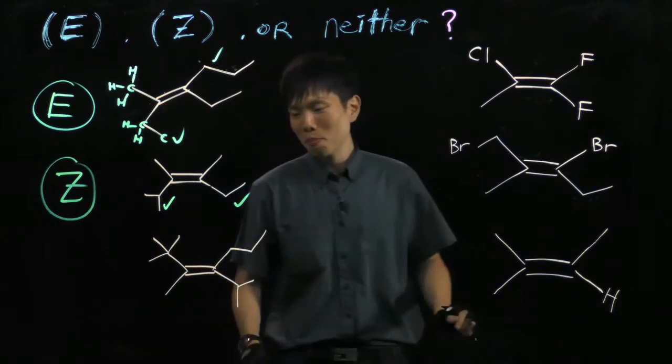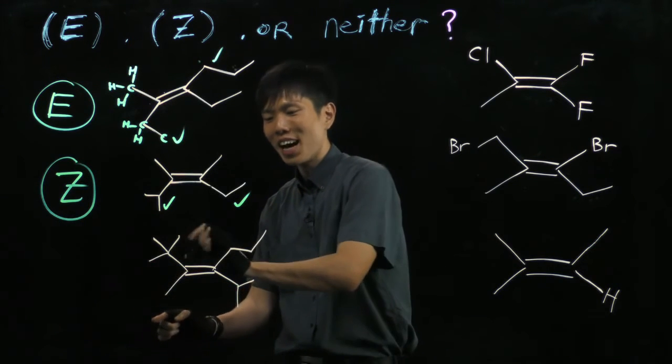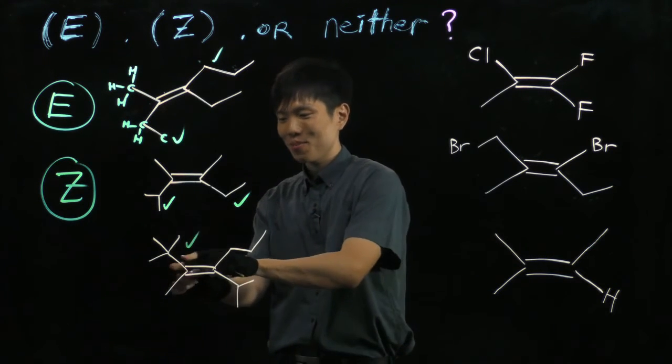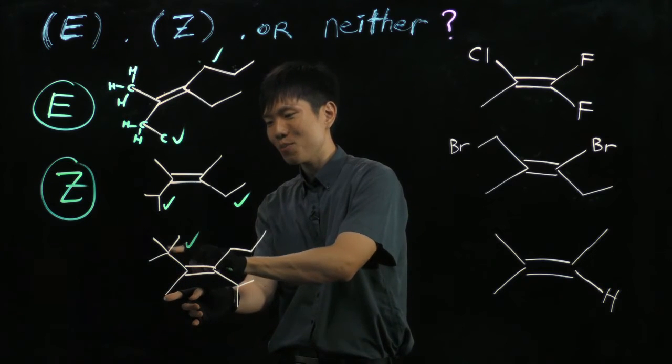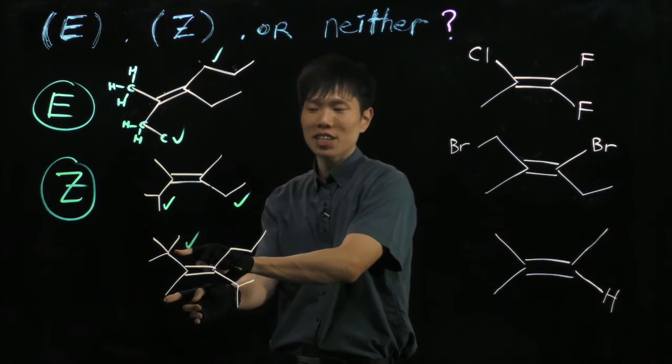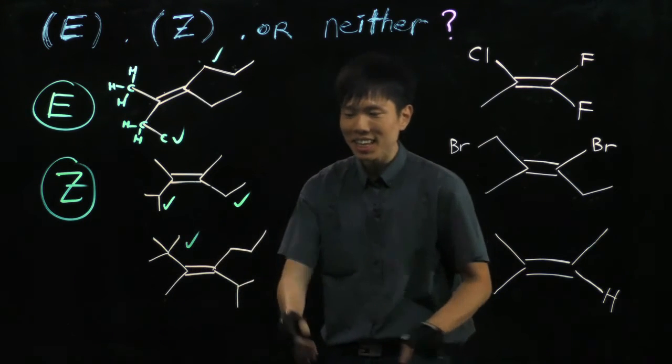Next up, you can see that the top one is of a high priority because you can go branch carbon, more carbons and carbon Hs are the lowest priority. So this guy wins. And for the other side,